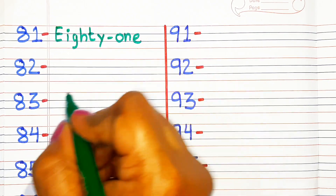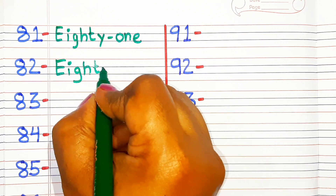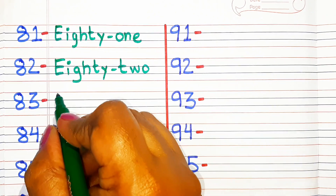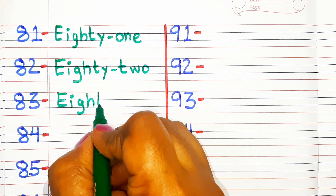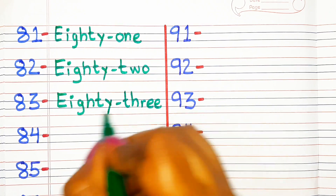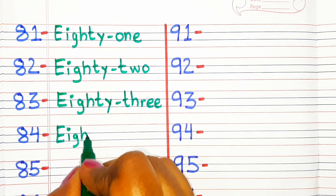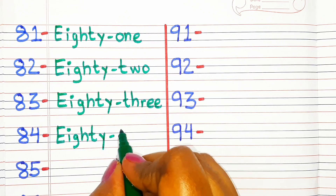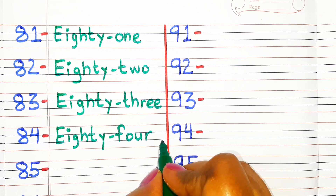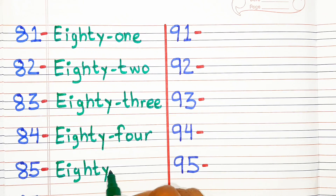E-I-G-H-T-Y-O-N-E 81. E-I-G-H-T-Y-T-W-O 82. E-I-G-H-T-Y-T-H-R-E-E 83. E-I-G-H-T-Y-F-O-U-R 84.